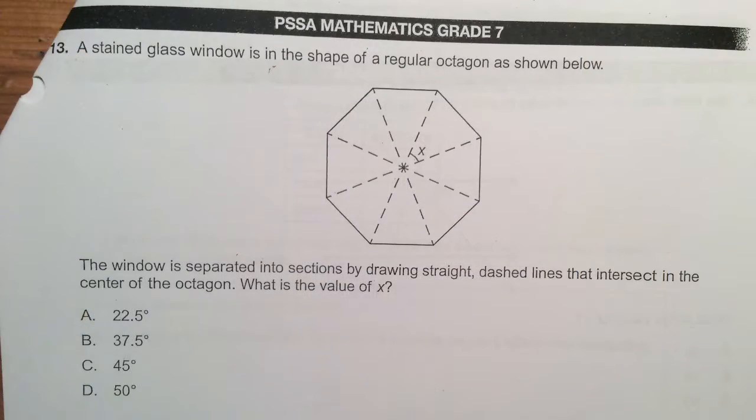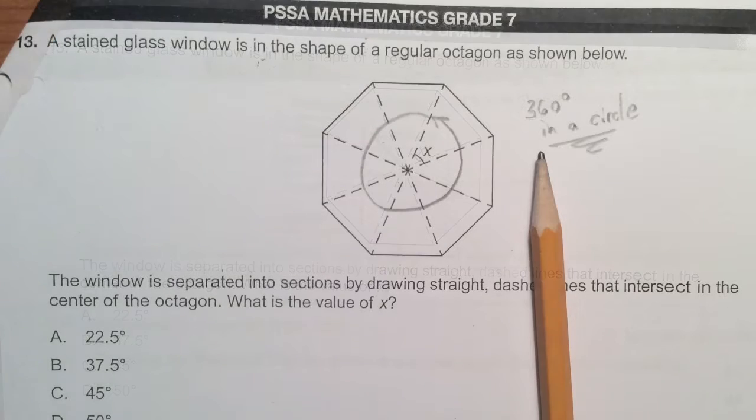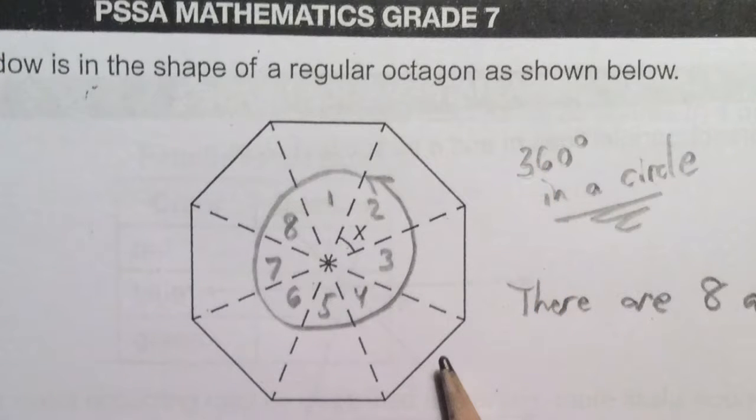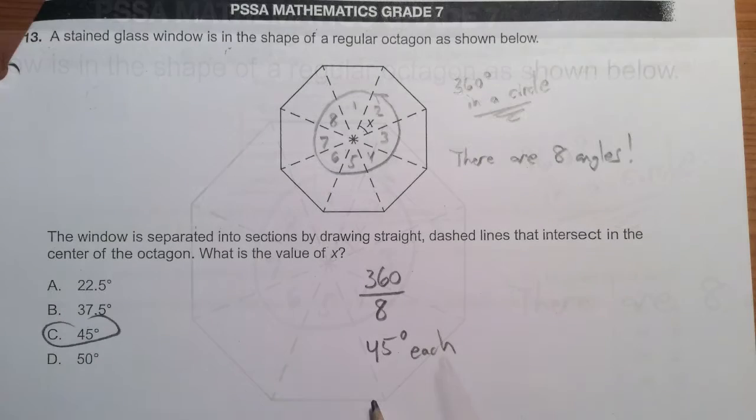In number 13, we have a problem about a stained glass window. We need to understand that a circle has 360 degrees. See how I drew one in there? If you look carefully, there are eight angles the same size as X. So you just take the 360 degrees divided by eight to find that each angle is 45 degrees. Answer is C.